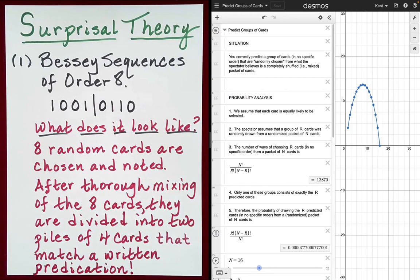So what does a Bessey sequence of order 8 performance look like? Well, there are many performances that can be designed taking advantage of the wonderful properties of Bessey sequences. I've listed just one here. What does it look like? Eight random cards are chosen. After thorough mixing of the eight cards, they are divided into two piles of four cards that match a written prediction.